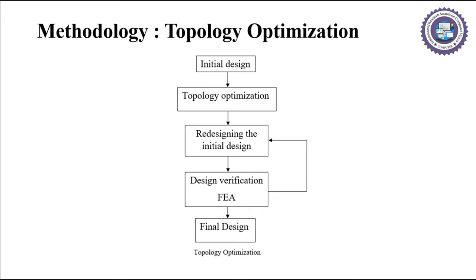Topology optimization methodology includes several steps. First, an initial design is created. Then topology optimization is performed on the initial design. Redesigning of the initial design is done if there are any changes after topology optimization. The design is then verified using finite element analysis. If there are any changes in the finite element analysis, it is sent back to the previous step; otherwise, it is considered the final design.